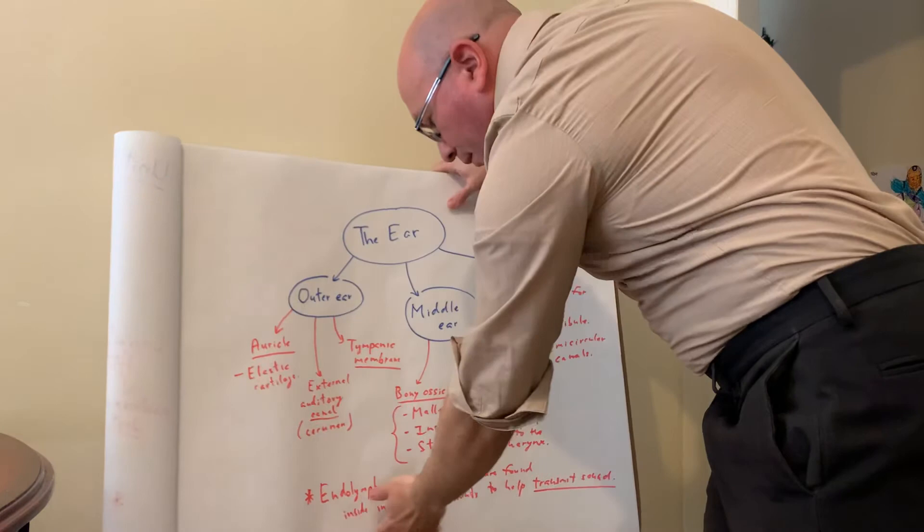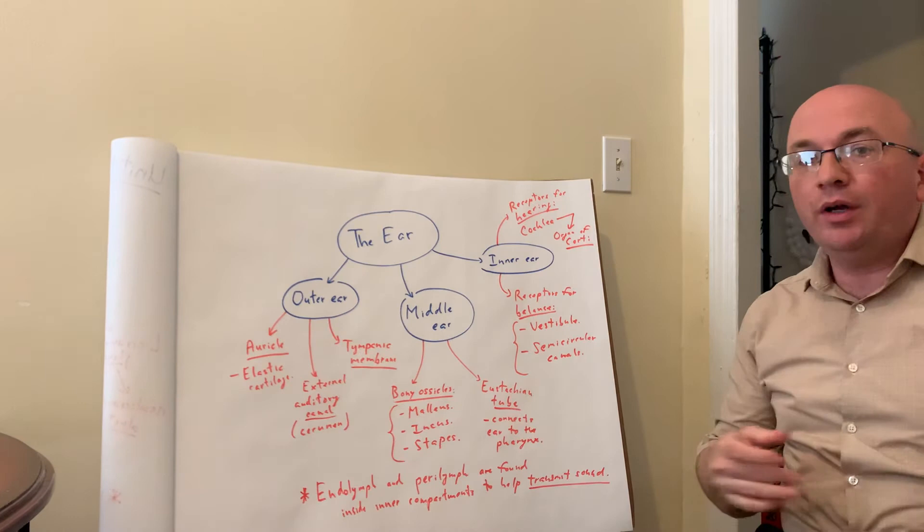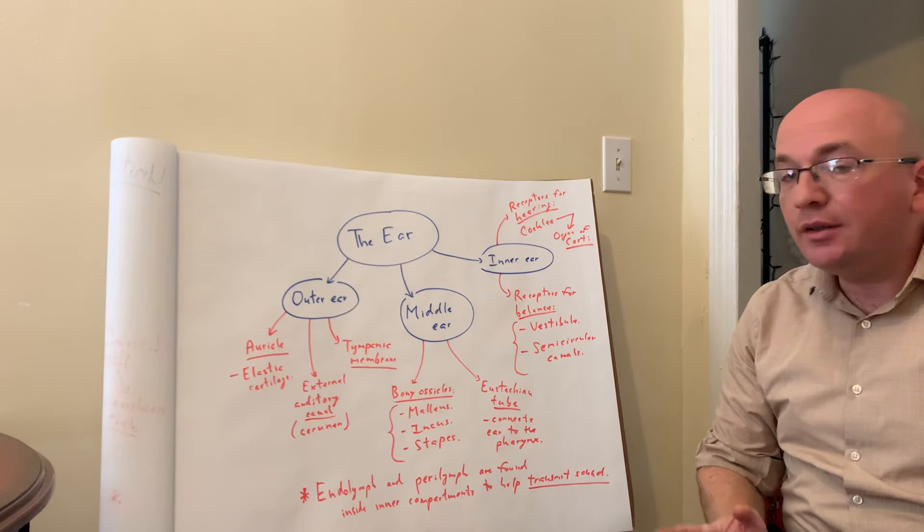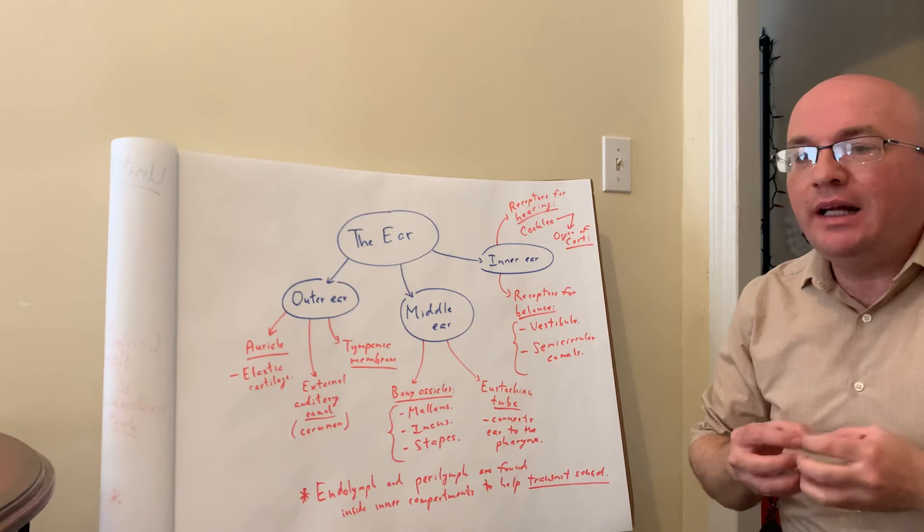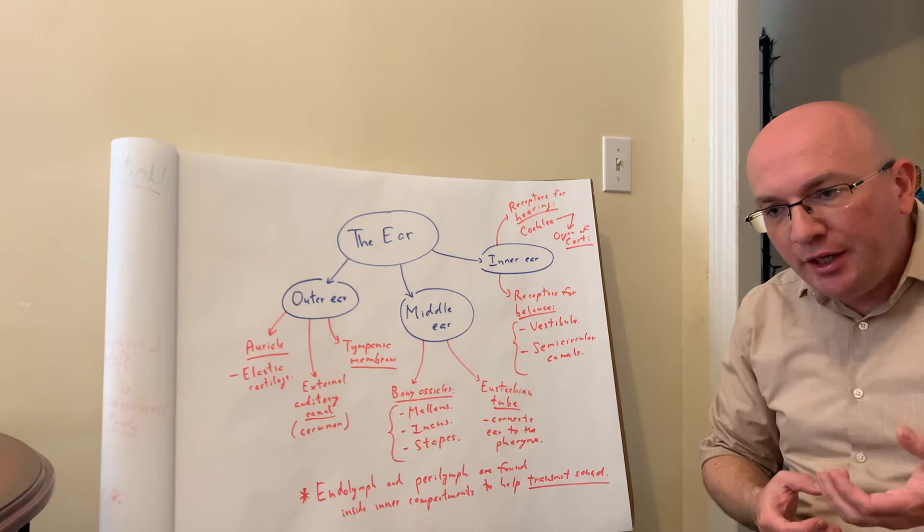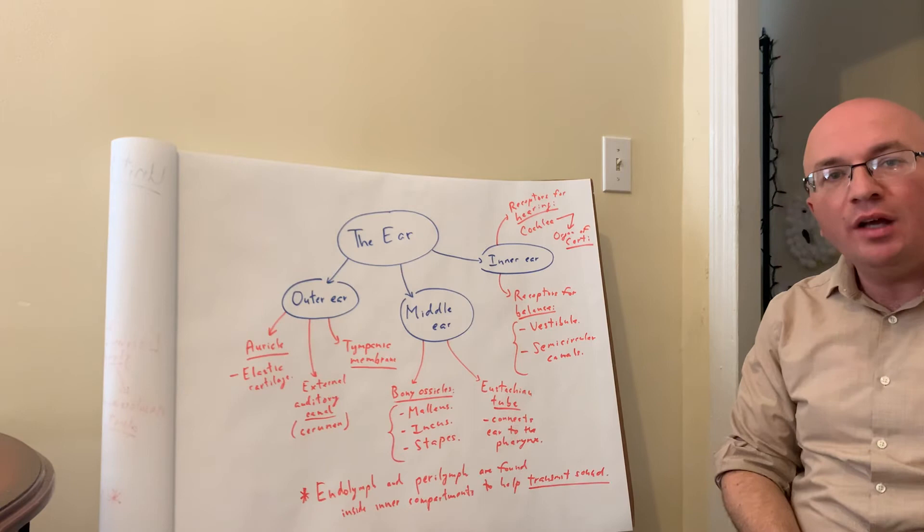The ear is the organ for hearing and balance or equilibrium. The ear consists of three components. We have the outer ear, or the external ear component, the middle ear, and the most important, the inner ear, which contains the mechanism that allows us to have the receptors to sense presence of sound waves, hearing, and balance information, and transmit that with the vestibulocochlear nerve or cranial nerve eight to the brain, to the temporal lobes, where that information will be processed.